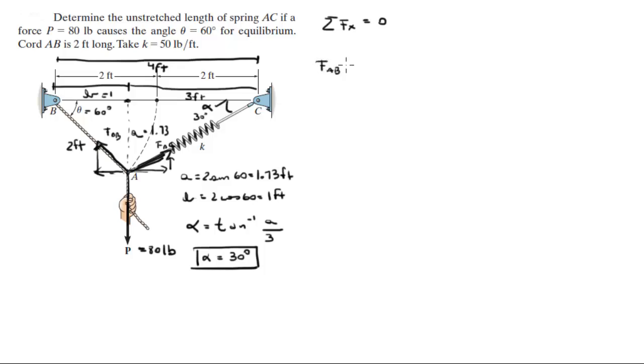So FAB times the cosine of 60 degrees, this is negative because it's going to the left, plus FAC cosine of 30 degrees because it's going to the right is equal to 0. So basically this component plus this component cancel out. So this is going to be negative 0.5 FAB plus 0.866 FAC is equal to 0, yeah it's more like it.